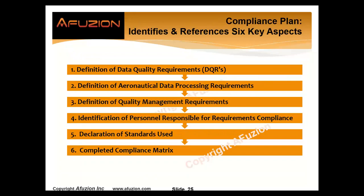The compliance plan — keep it short and sweet, 40 to 50 pages. Identify and reference six key areas: define your data quality requirements; define your aeronautical data processing requirements at a high level; define your quality management requirements; identify which personnel are responsible for compliance; declare what standards you use; and show a compliance matrix, which will be completed when you're approved.